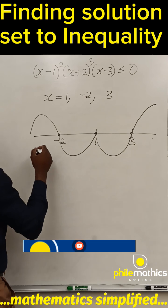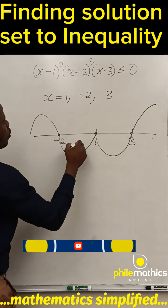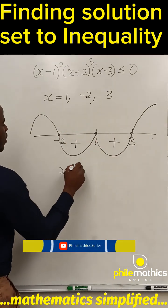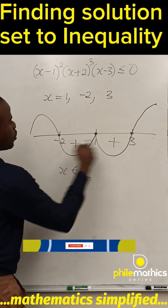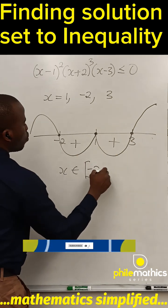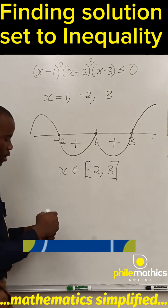So I'm looking for the values less than or equal to zero. These are the ones we are looking for. So x is in the interval -2 to 3. Thank you for watching.